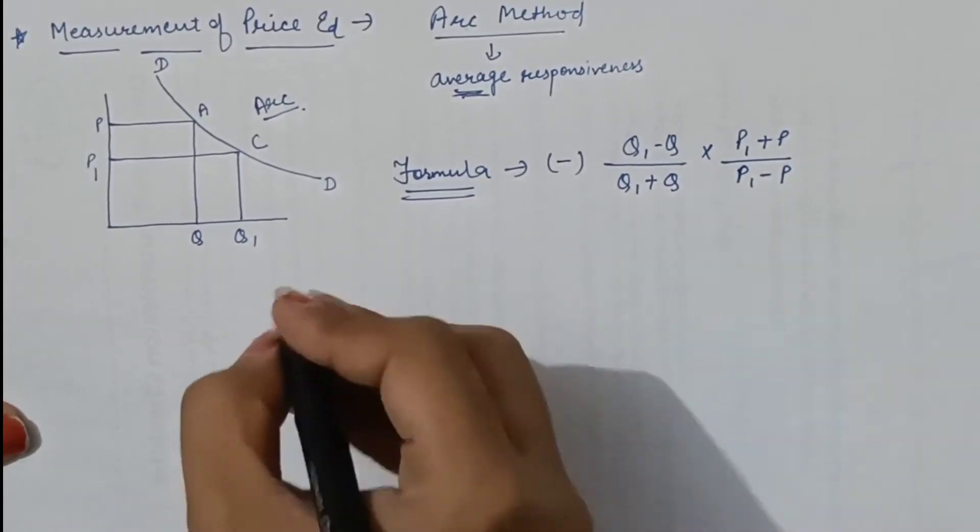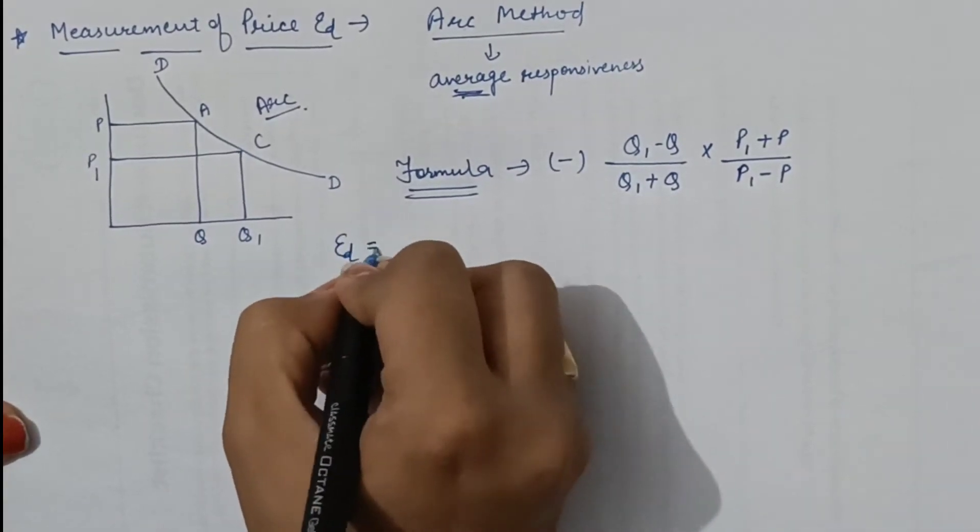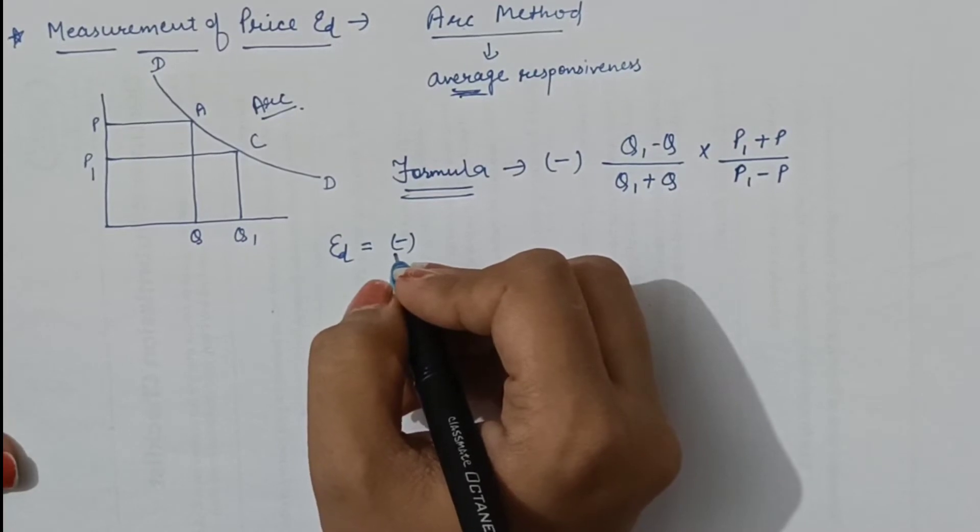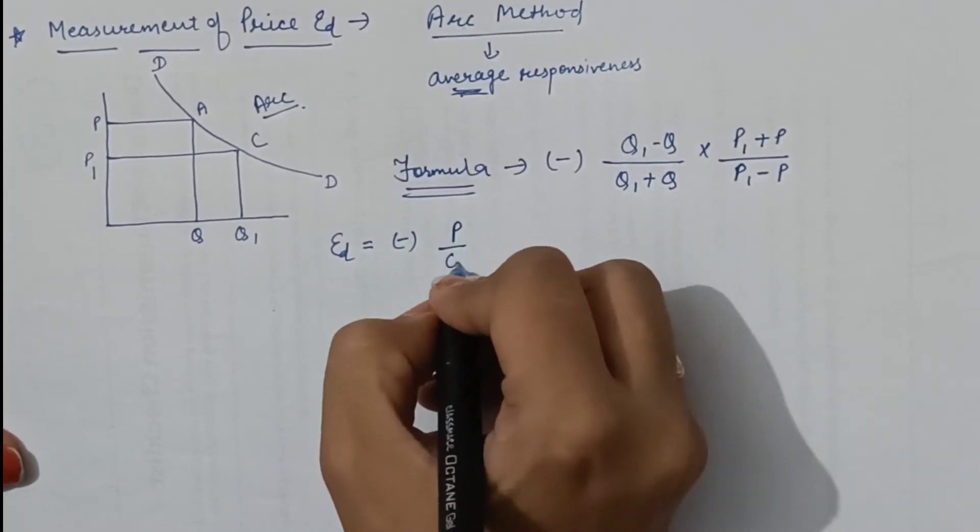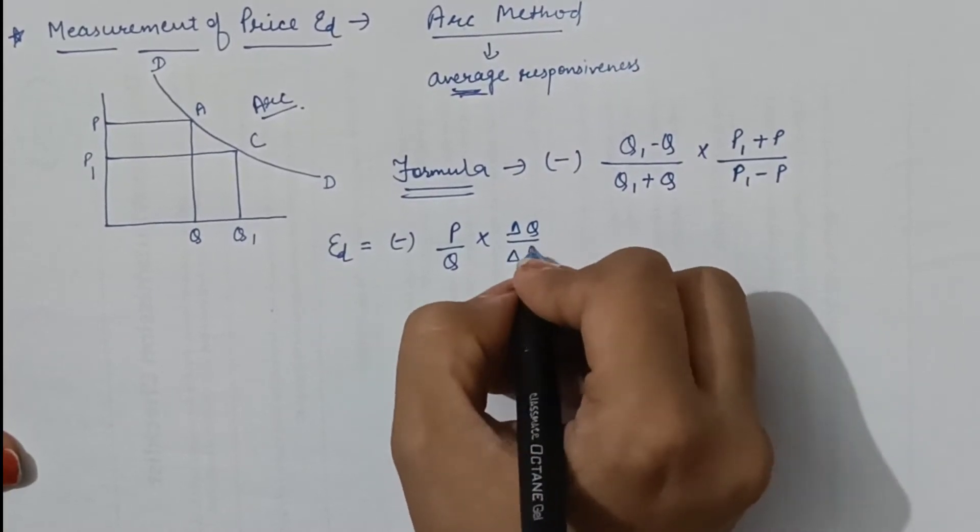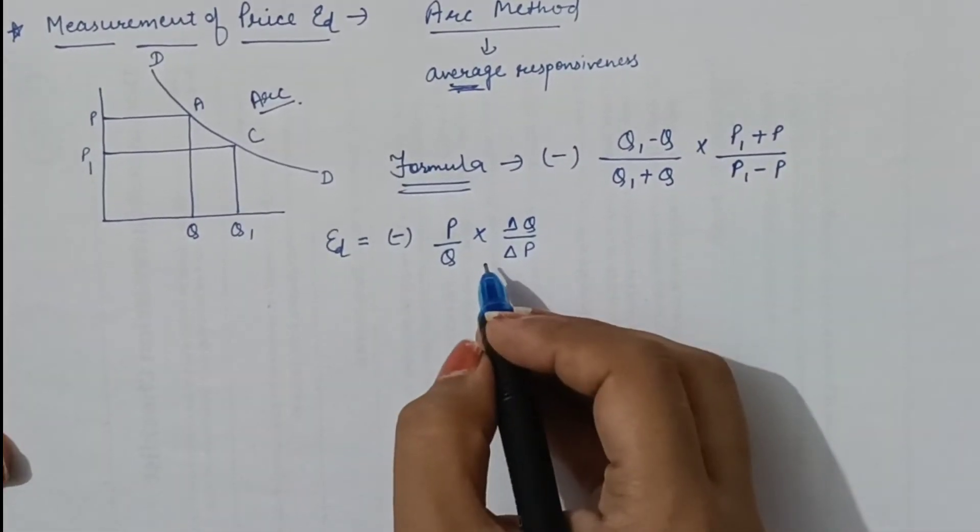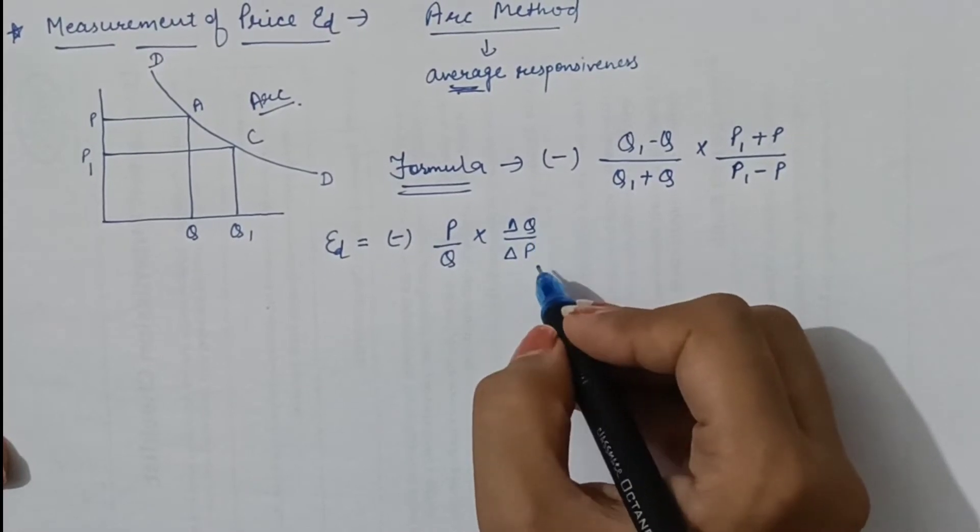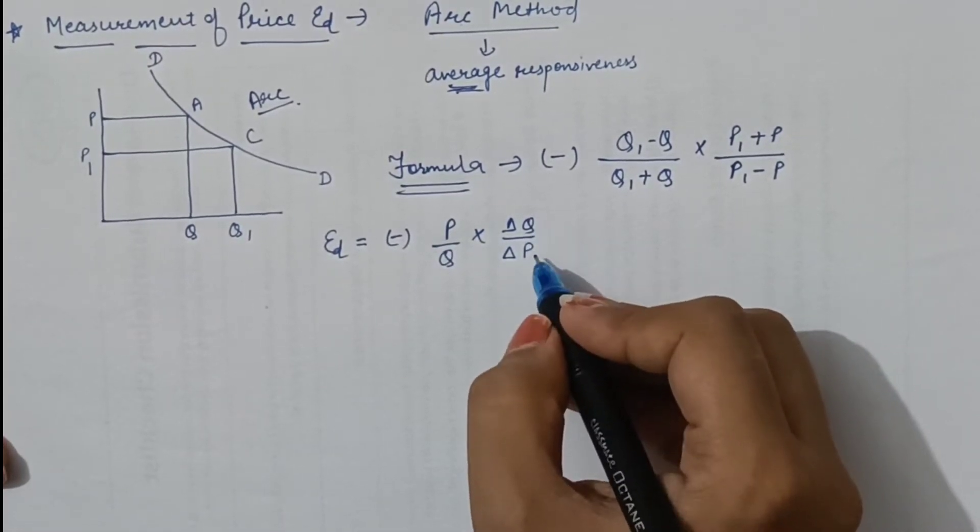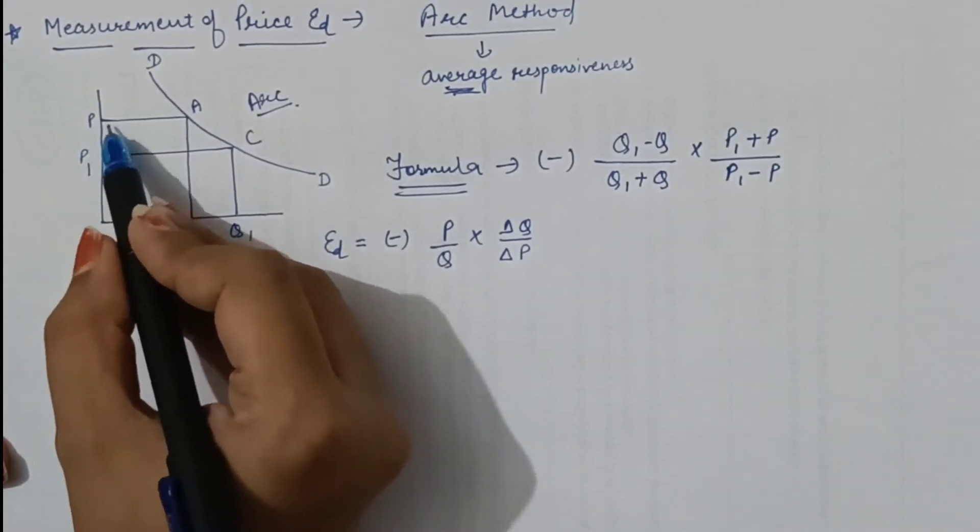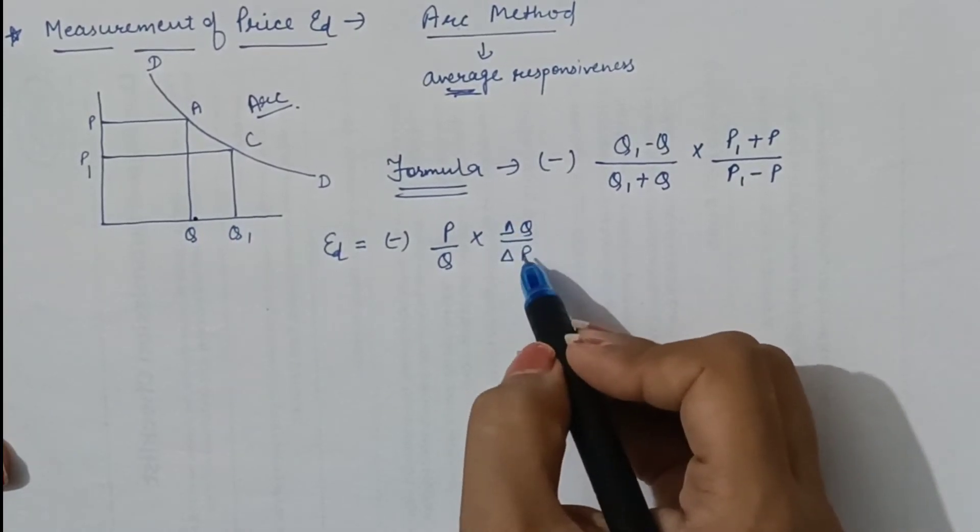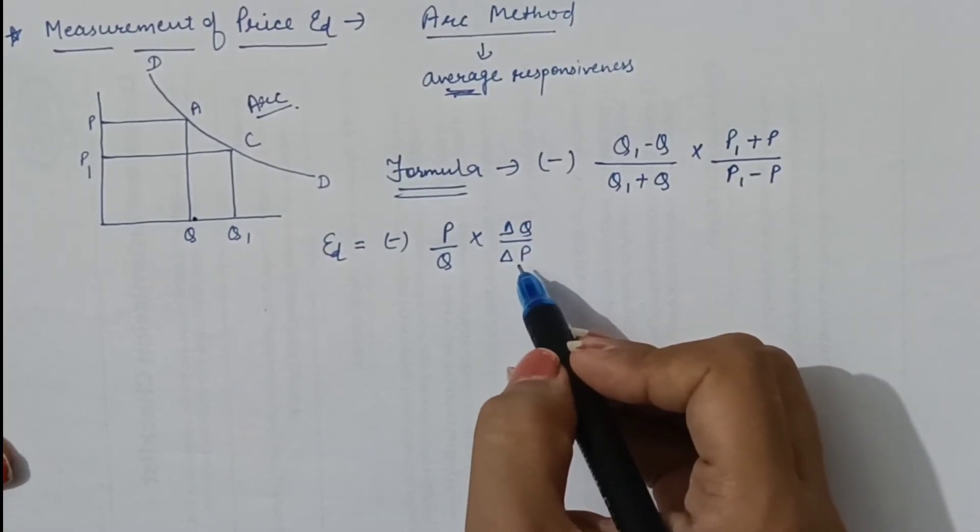For derivation, we start with the formula of measuring price elasticity of demand according to the percentage method. It was P/Q × ΔQ/ΔP. In this formula, ΔQ and ΔP both concepts are the same because we calculate the difference or change in price or change in quantity, depicted by ΔQ and ΔP.